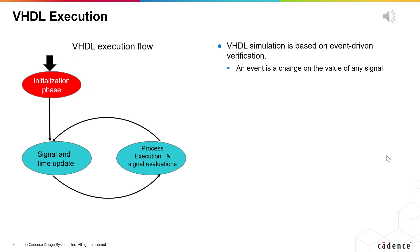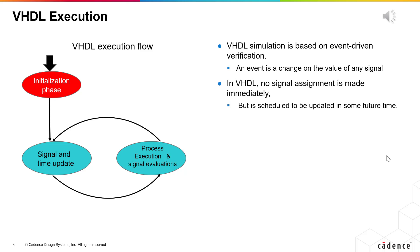VHDL simulation is event-driven. Simulation led by events means the process of simulation is only made when there is any event on any signal in the sensitivity list. An event implies a change in the value of any signal. In VHDL, no signal assignment is made immediately, but is scheduled to be updated in some future time.